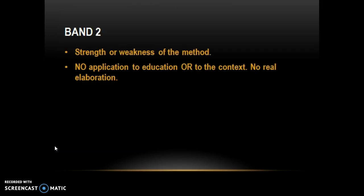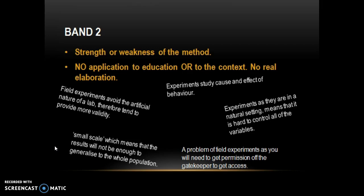Moving up, you've got Band 2. These tend to be strengths or weaknesses of a method with very little application to education or the context, and no real elaboration. For example: 'Field experiments avoid the artificial nature of a lab — they're more valid'; 'Small scale, which means the results may not be enough to generalise'; 'Experiments are cause and effect'; 'Experiments are in a natural setting — they're hard to control the variables'; 'Field experiments require permission from a gatekeeper.' No real elaboration, no real application — really basic.